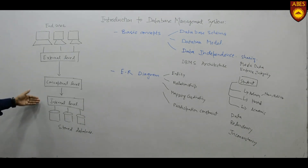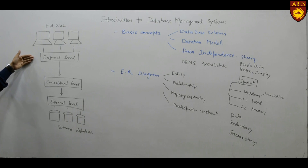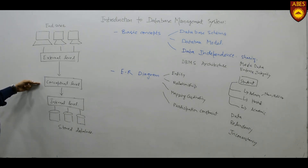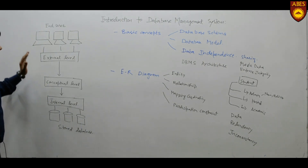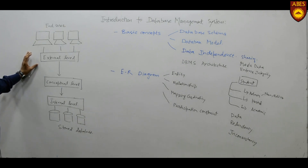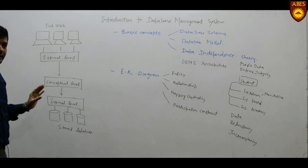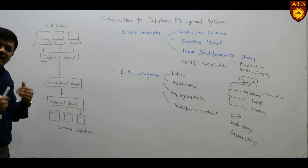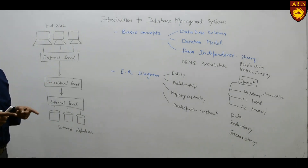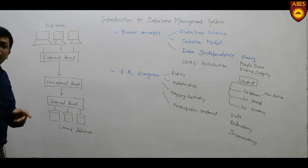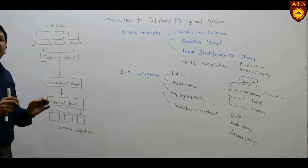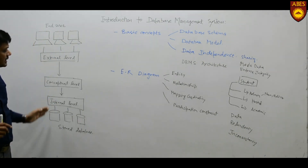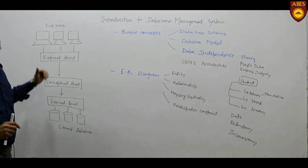The DBMS has a three-layer architecture. The first is the external level, where the end user resides. Then there is the conceptual level, and then the internal level — this is the three-layer architecture of the DBMS, with the stored database at the bottom. The user, through application programs, understands the external schema. At the conceptual level the database is designed, and at the internal level it relates to the storage of data only.